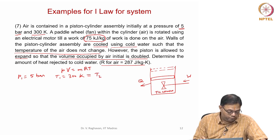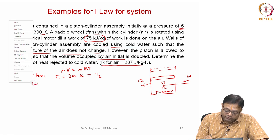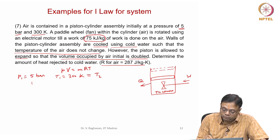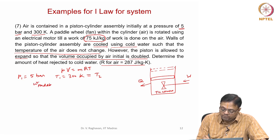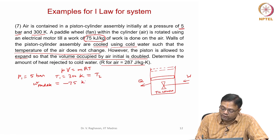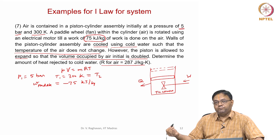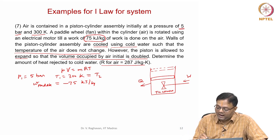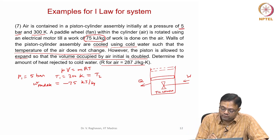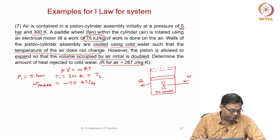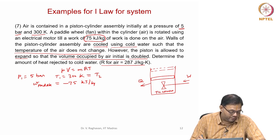Since it is isothermal, T1 = T2. The specific work of the paddle or fan is given as minus 75 kilojoules per kg. It is negative because work is done from the surroundings to the system — for air as the system, work coming in is negative.